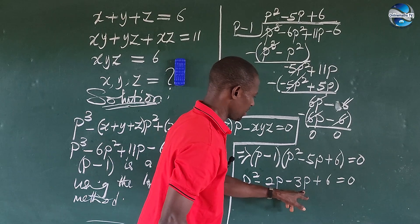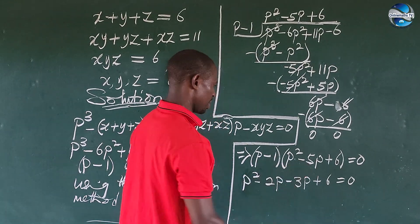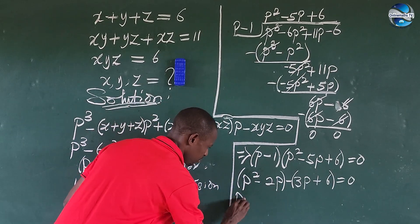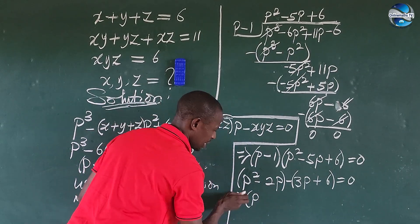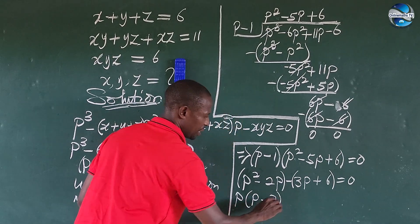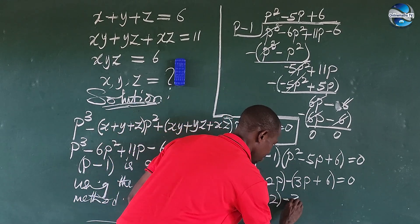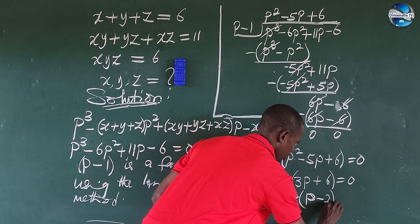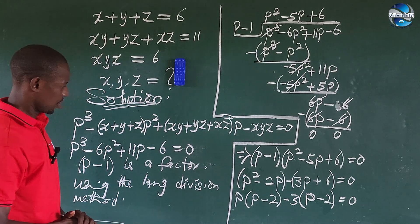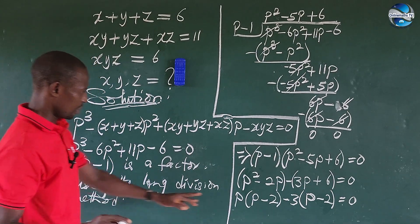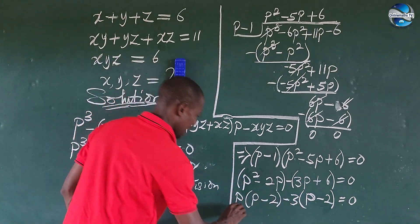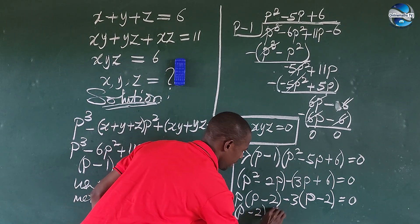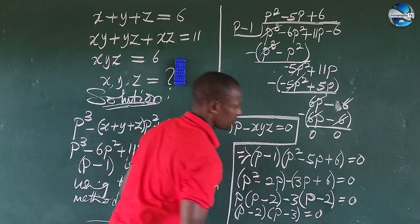So we have P squared minus 2P minus 3P plus 6 equal to 0, since minus 2P minus 3P gives minus 5P. Bracketing: P times P minus 2, minus 3 times P minus 2, all equal to 0. This gives us P minus 2, times P minus 3, equal to 0.